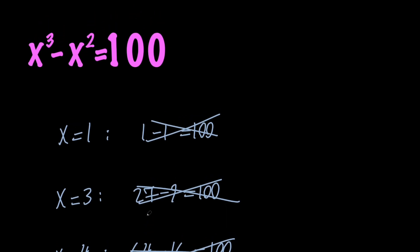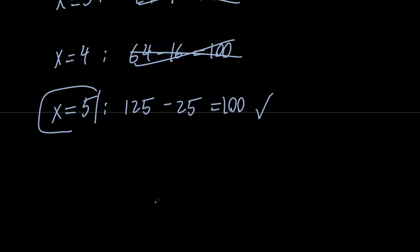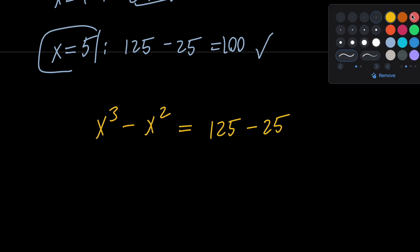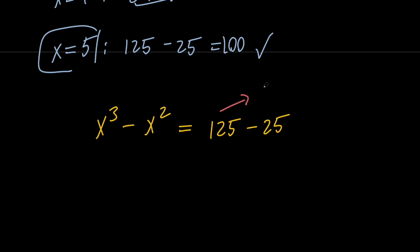So x equals 5 satisfies our equation, and therefore it is a solution. Let's go ahead and use this fact to solve our equation. We know that x cubed minus x squared equals 100, but we can replace 100 with 125 minus 25. We do this because 125 is 5 cubed and 25 is 5 squared. So on the left hand side we have something cubed minus the same thing squared, and we have the same structure on the right hand side.